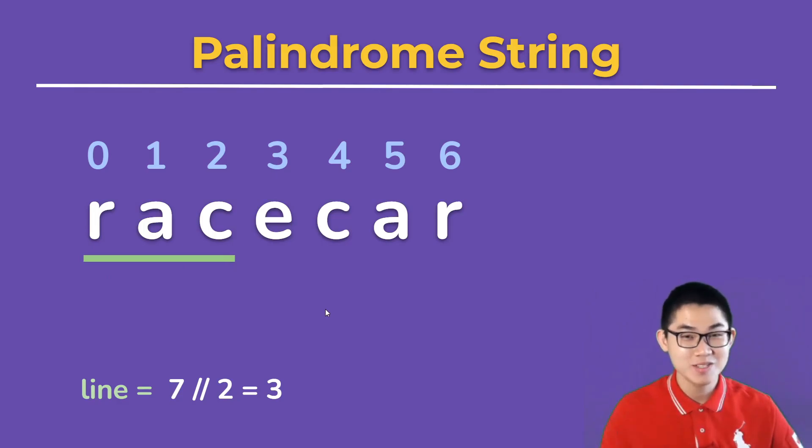Now we're really close to finishing. The last step is to put the two arrows, one at the beginning and one at the end, and then we compare the letters. So R and R are the same. That's good.